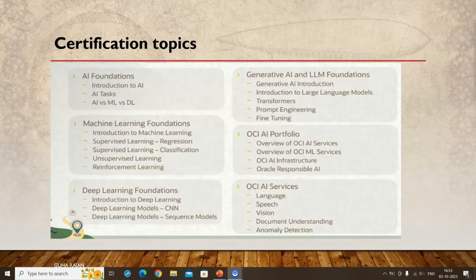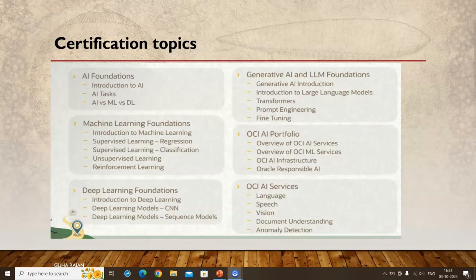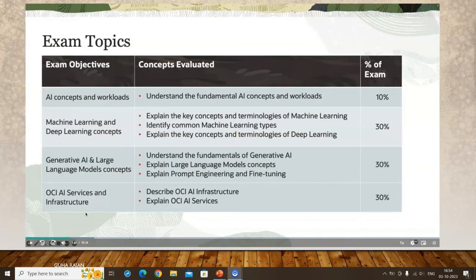If you're a student or very new to machine learning concepts, I'd say if you can spend full time, about three to four days maximum is enough to go through the course plus get the certification. Otherwise, if you can't spend three to four days continuously, it might take about two weeks, studying on weekends, to go through all the topics.